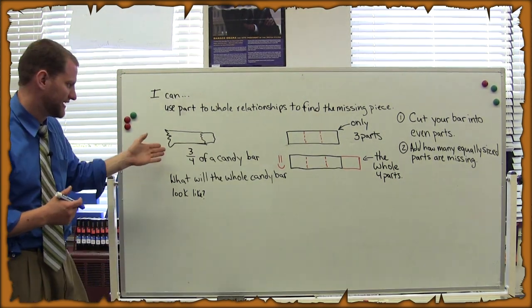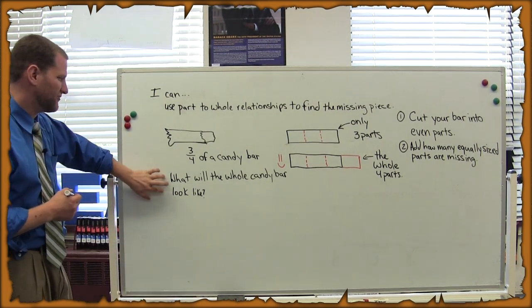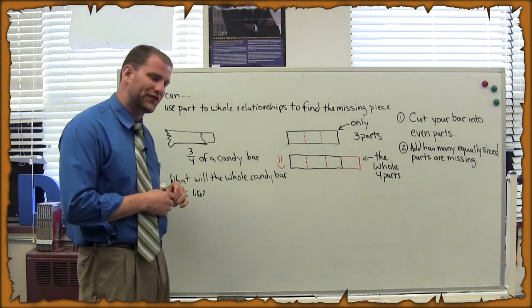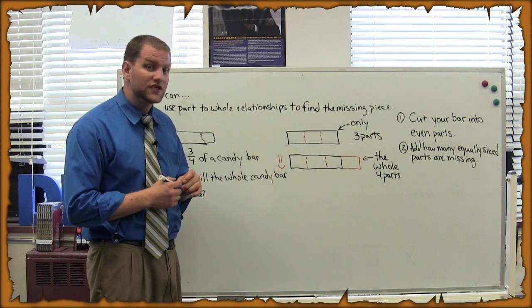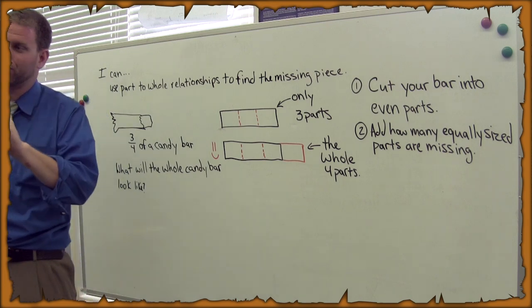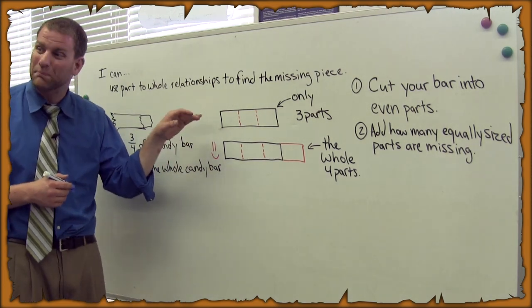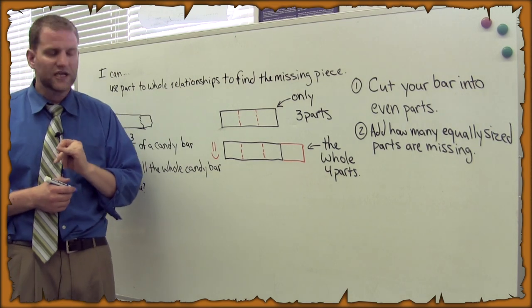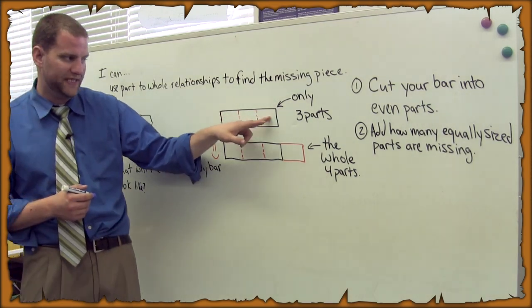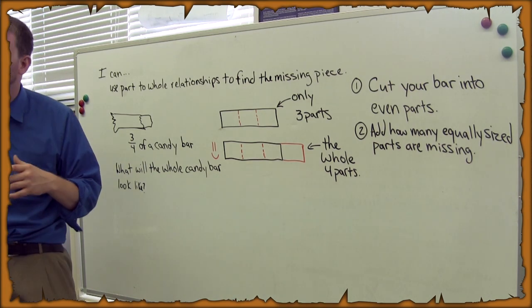And I came up with this. I had three-fourths of the candy bar, and it looked like so. I went ahead and thought, hmm, what's the whole thing going to look like? So I took how much of the candy bar I had, and I split it into three even pieces. The reason I chose three is because that's only part of the candy bar.